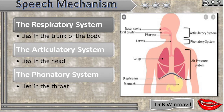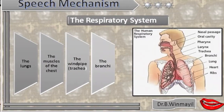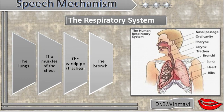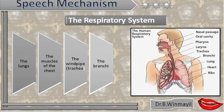Let us see one by one. The first one is the respiratory system. It is the system in which the pulmonic air gets in and gets out. It consists of four parts, namely the lungs, the muscles of the chest, the windpipe, and the bronchi.